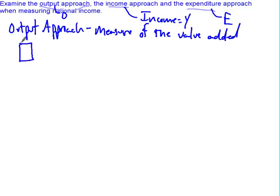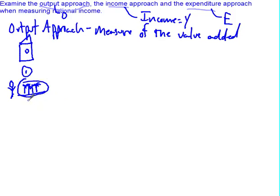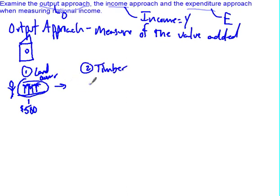Let's use birdhouses as our example. We have a landowner with a plot of land full of trees. They allow a timber company to come and cut down the trees for wood, charging $500. The timber company chops the trees, runs them through a factory, and converts them into two-by-fours. The value of those two-by-fours is $5,000.